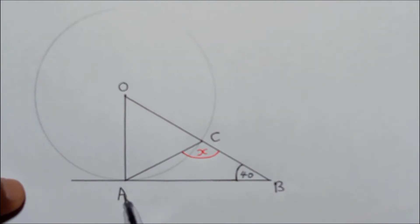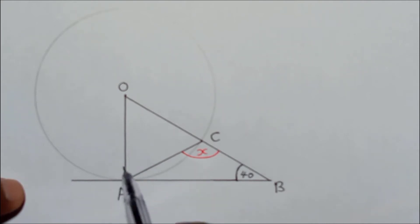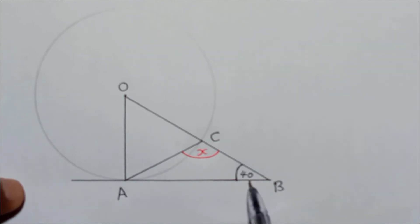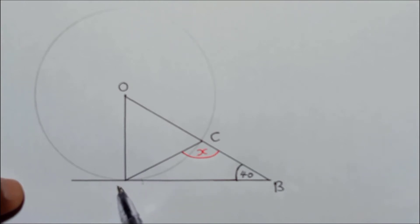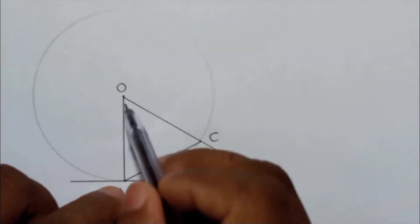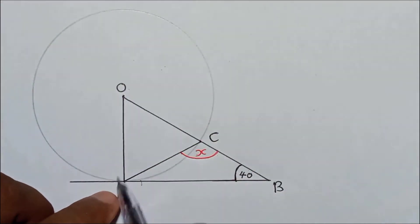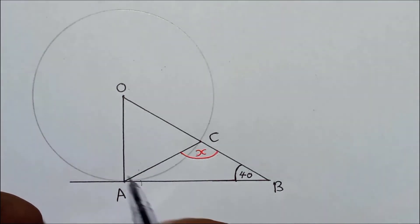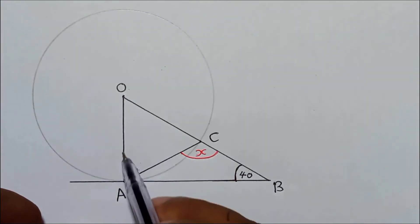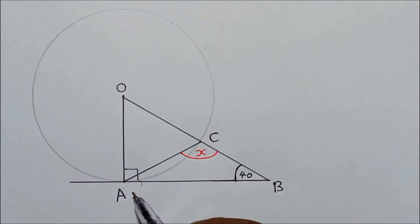Now here they say AB is a tangent to the circle. That means OA is the radius. Between the radius and the tangent, there must be 90 degrees. When you have a tangent at the tangent point and you draw a radius, this angle must be 90 degrees. So angle OAB is 90 degrees. Remember — between tangent and radius, it must be 90 degrees.